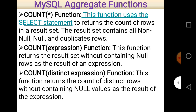COUNT(expression) returns the result set without containing null rows as the result of an expression. The difference between COUNT(expression) and COUNT(*) is that COUNT(*) returns all values — non-null, null, and even duplicates — but COUNT(expression) does not include null rows. The COUNT(expression) function returns the result set without containing null rows; those rows which contain null values are not considered.